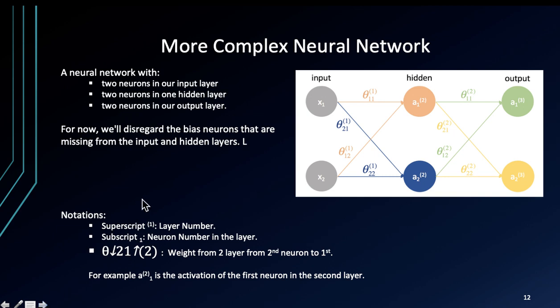When we have more complex neural networks, we have two neurons in our input layer, two neurons in one hidden layer, and then two neurons in our output layer. Essentially, this is the kind of function that will follow.